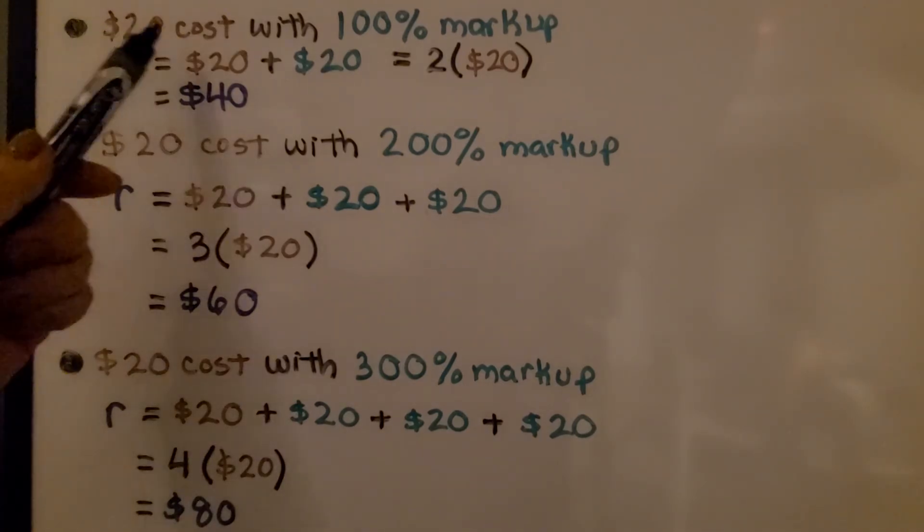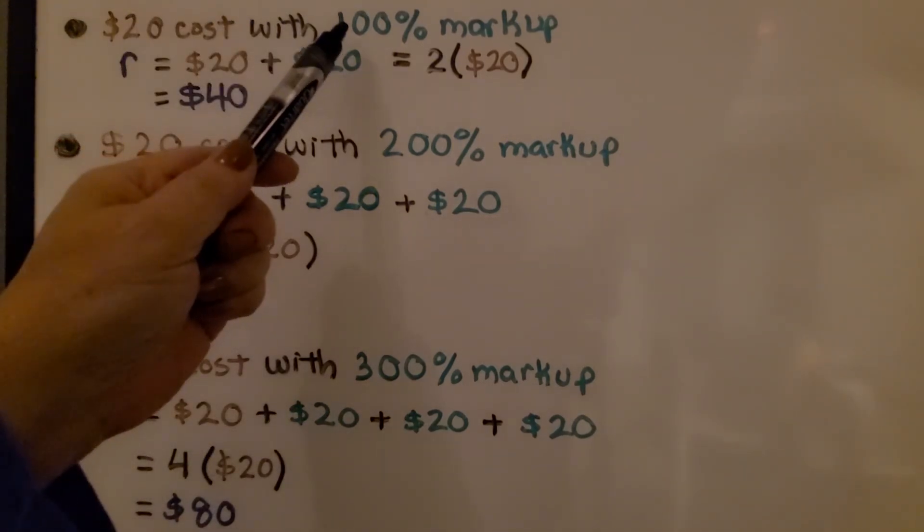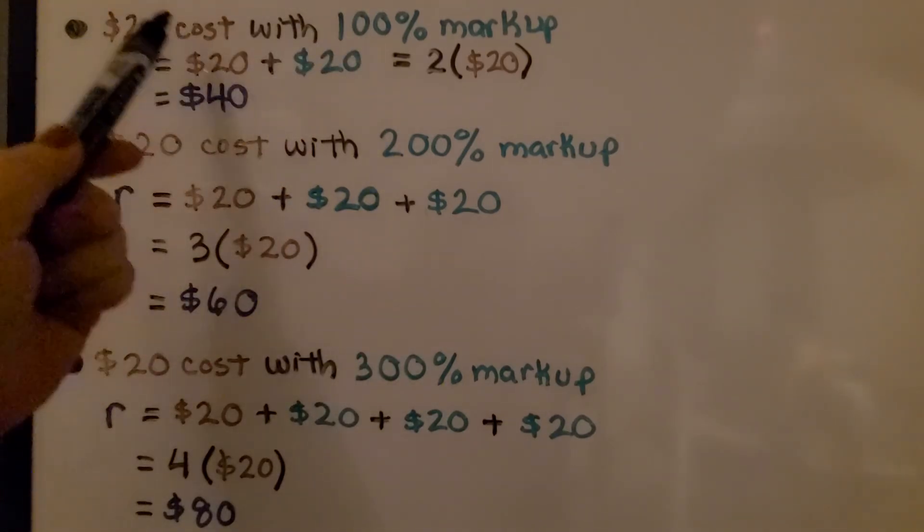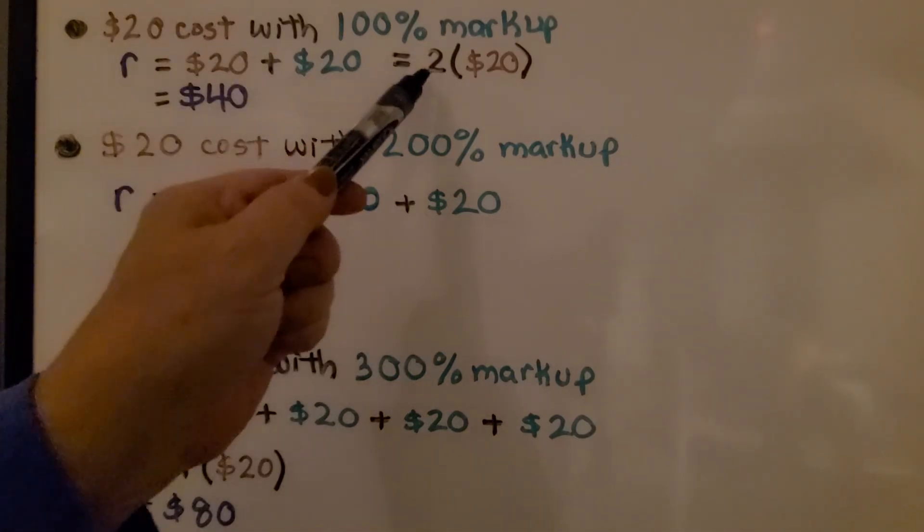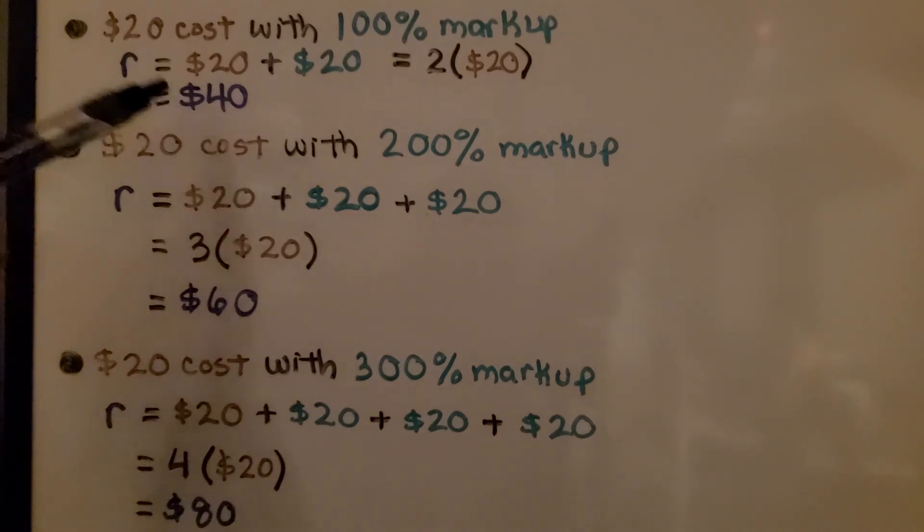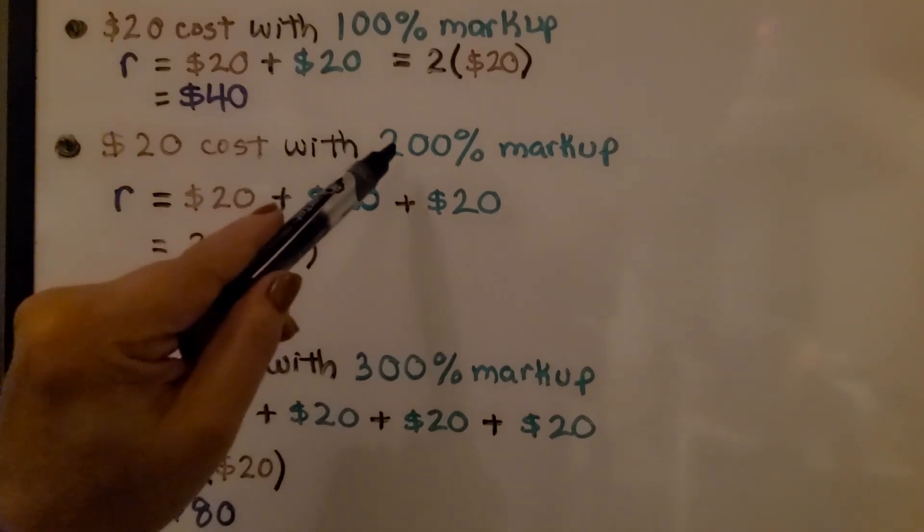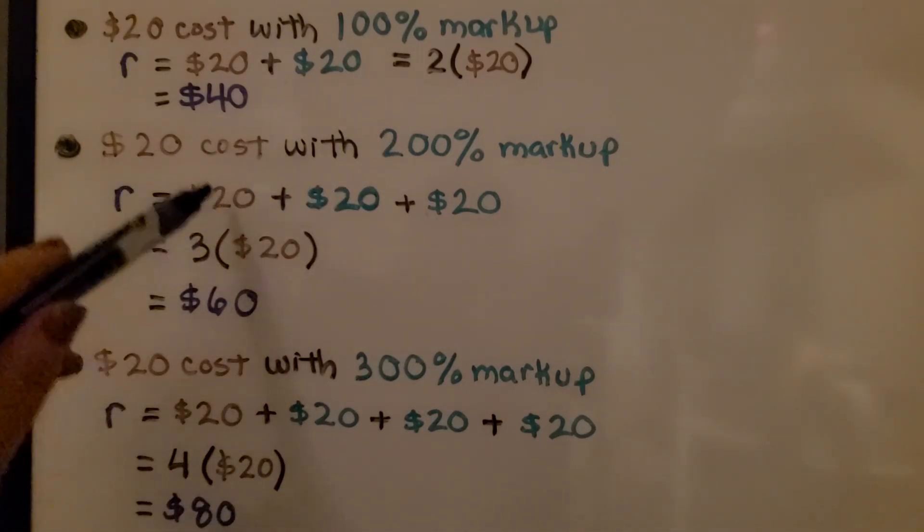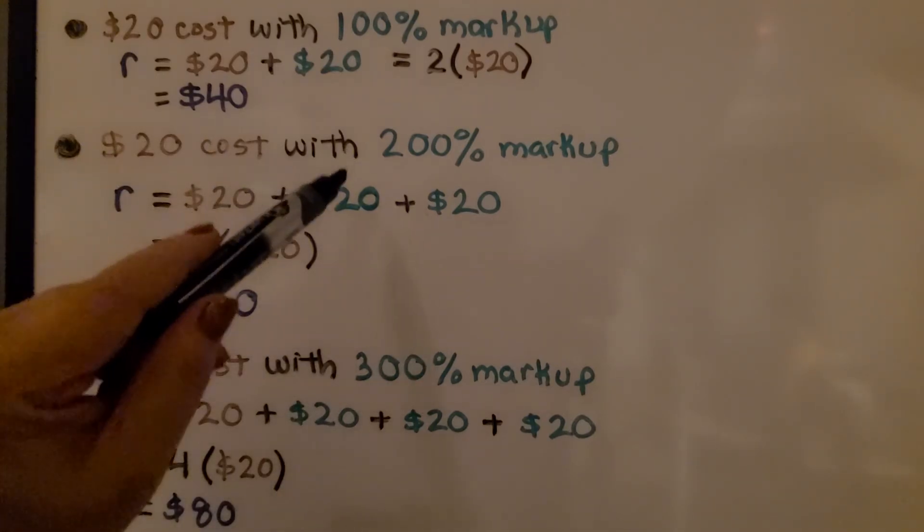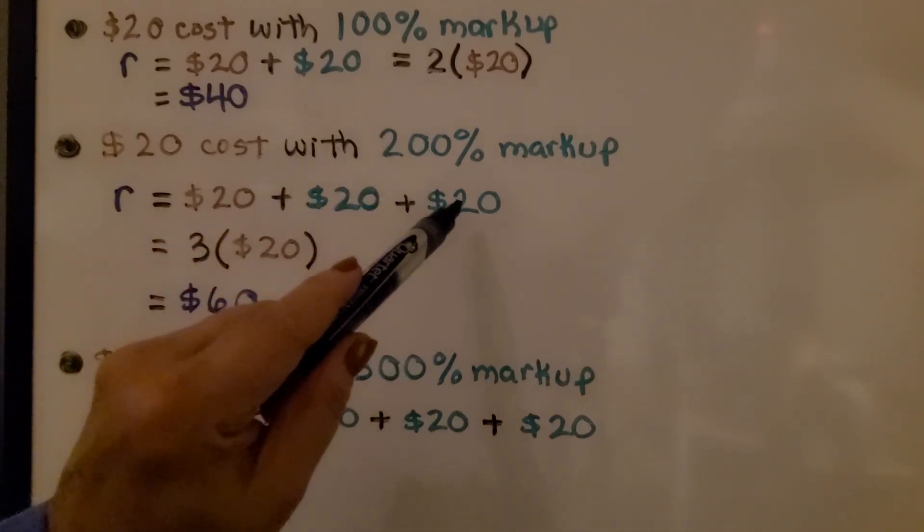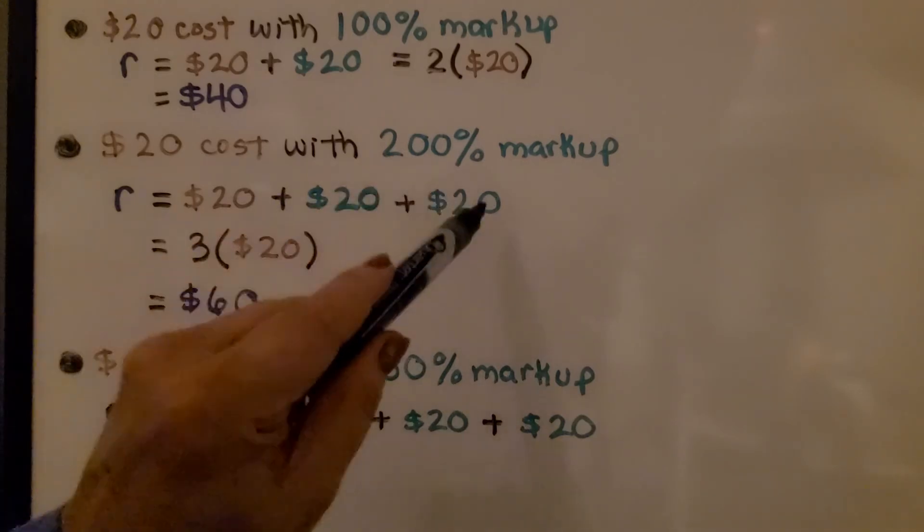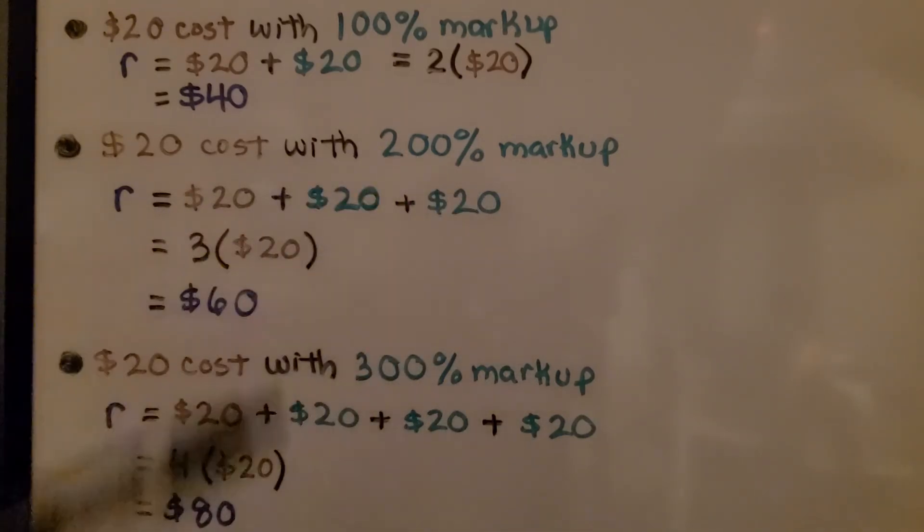If we have a $20 cost and want to mark it up 100%, we add the $20 cost plus 100% of that $20. We have 20 plus 20, or 2 times $20, which is $40. If we have a $20 cost and mark it up 200%, we've got our original cost $20 plus 200% of $20. 100% would be $20, and another 100% would be another $20. That's 3 times $20, a $60 retail price.